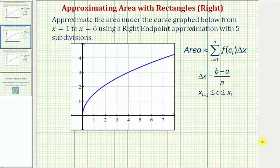Welcome to an example on how to approximate the area under a curve using rectangles. We're asked to approximate the area under the curve graphed below from x equals one to x equals six, using a right endpoint approximation with five subdivisions or five subintervals.